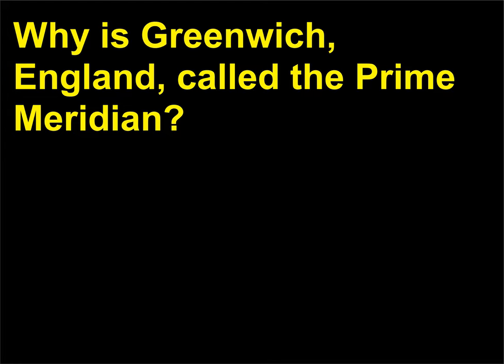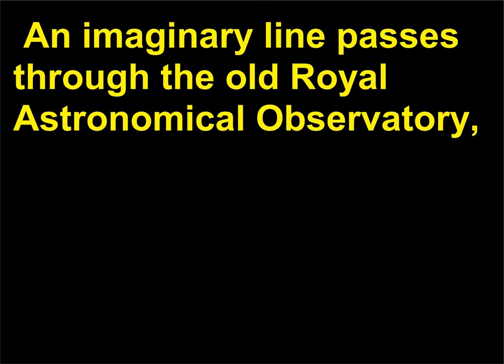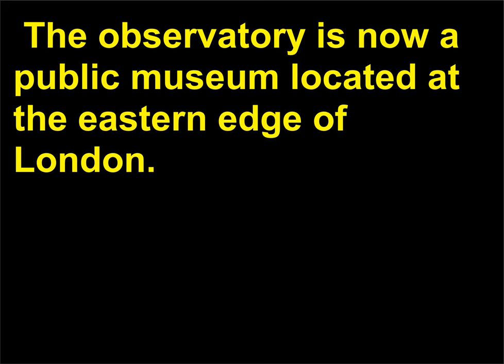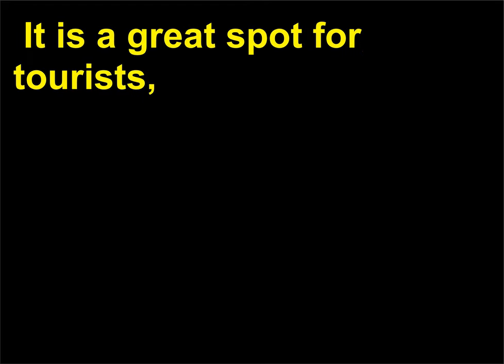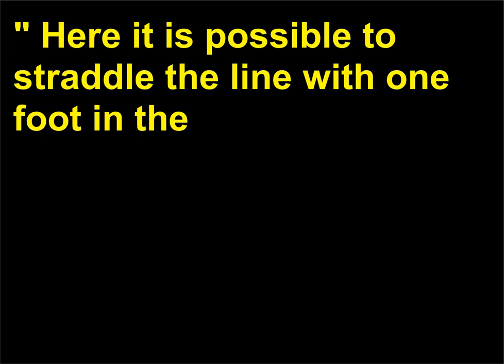Why is Greenwich, England, called the prime meridian? The reason for Greenwich, England, being the prime meridian is historical. An imaginary line passes through the old Royal Astronomical Observatory, which was chosen by astronomers of the day as zero longitude. The observatory is now a public museum located at the eastern edge of London. It is a great spot for tourists, who can find there a long strip of brass that stretches across the yard marking the prime meridian. Here it is possible to straddle the line with one foot in the Earth's eastern hemisphere and the other in the western hemisphere.